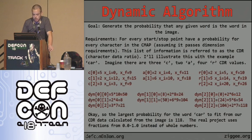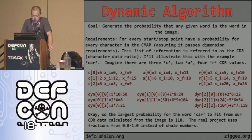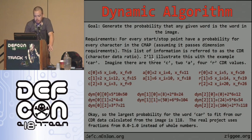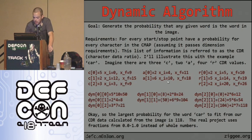The dynamic algorithm generates the probability that a word matches the cmap ratio data calculated from the image. Every start and stop point has a probability for every character in the cmap, assuming it passed the dimension check. This list is called the CDR. To illustrate: using the word 'car', imagine three c-entries, two a-entries, and four r-entries in the CDR. The three c's have ratio data of 5, 2, and 3, found at xi=0 to xf=9, and so on for 'a' and 'r'.